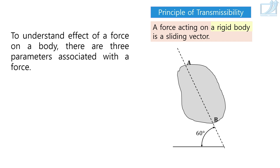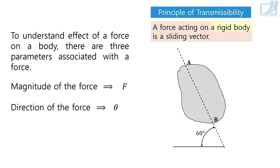Therefore, to understand the effect of a force on a body, there are three parameters associated with the force: magnitude of the force, direction of the force, and — listen carefully — the line of action of the force. Earlier I said the three parameters were magnitude, direction, and point of application. Now I am saying magnitude, direction, and line of action. Remember: if the line of action of a force is known, then the point of application is known — which is any one point on that line.